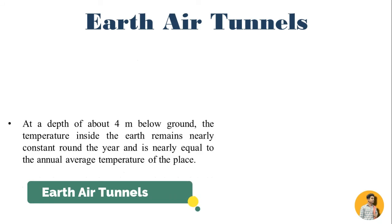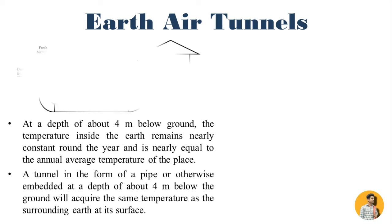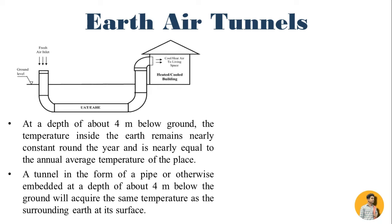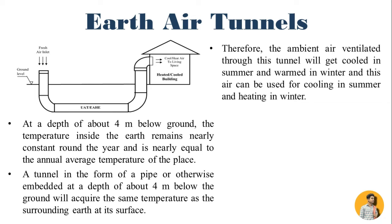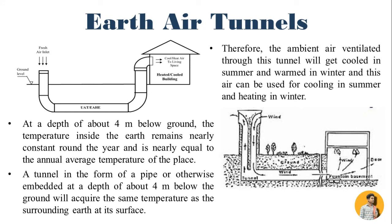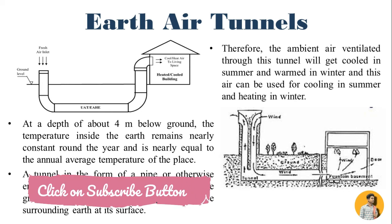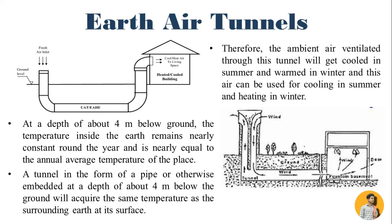Earth air tunnels: at a depth of about 4 meters below ground, the temperature inside the earth remains nearly constant around the year and is nearly equal to the annual average temperature of the place. A tunnel embedded at a depth of about 4 meters below ground will acquire the same temperature as the surrounding earth. Therefore, ambient air ventilated through this tunnel will get cooled in summer and warmed in winter, and can be used for cooling in summer and heating in winter.